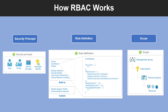Scopes are structured in a parent-child relationship. When you grant access at a parent group, those permissions are inherited by the child scopes. For example, if you assign the contributor role to a group at the subscription scope, that role is inherited by all resource groups and resources in the subscription.